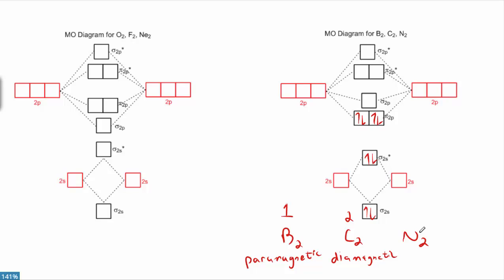Moving on to N2: nitrogen's got five valence electrons, so N2 would have a total of ten valence electrons to fill into the MO diagram — we'd have to add two more. Calculating bond order: two, four, six, eight bonding electrons minus two antibonding is six, divided by two gives a bond order of three — analogous to a triple bond. We know what molecular nitrogen N2 looks like, and it has a triple bond. Molecular orbital theory is consistent with Lewis dot structure theory here. We also see that all electrons are paired up, so N2 would be diamagnetic.